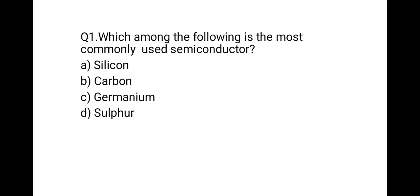The first question is: which among the following is the most commonly used semiconductor? The correct answer is silicon, because silicon has a wider specific temperature range than germanium.